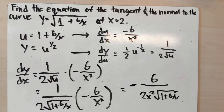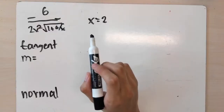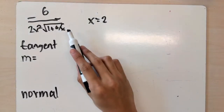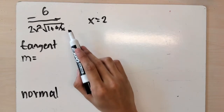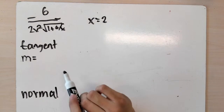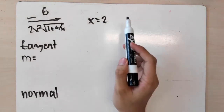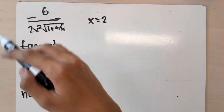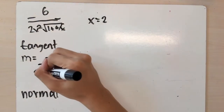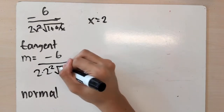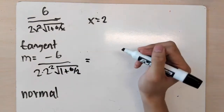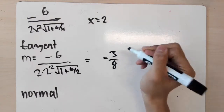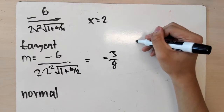That's a pretty ugly function. We'll use this gradient function to find the gradient of both the tangent and the normal. To find the slope of the tangent at x equals 2, we plug 2 into the derivative: negative 6 over (2 times 2 squared times the square root of 1 plus 6 over 2), which equals negative 3 over 8. So the slope of the tangent is negative 3 over 8.